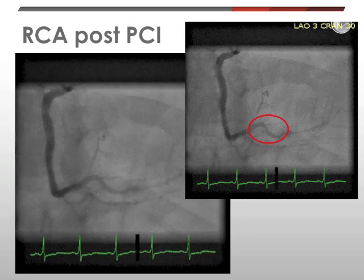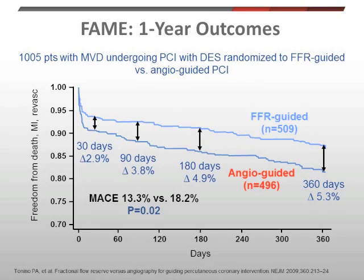This case is a nice illustration of the FAME trial, which compared two different strategies in approximately 1,000 patients with multi-vessel CAD. Patients were randomized to angiographically guided PCI — where all lesions that appeared significant by angiogram underwent PCI — versus hemodynamically guided PCI, where lesions underwent FFR and only those that were hemodynamically significant were treated. Looking at one-year outcomes, there is a significant reduction in the overall event rate — a combination of death, MI, and revascularization — of approximately 5%, from 18% to about 13% overall MACE rate.